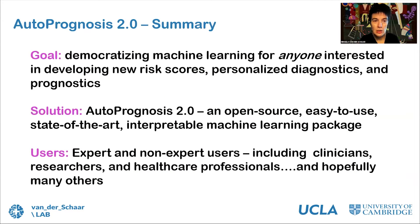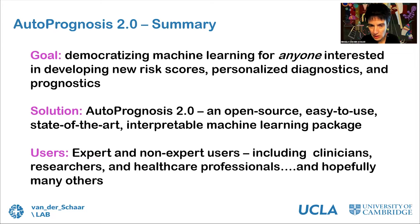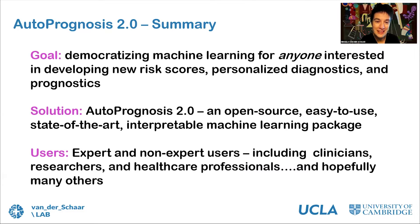We believe AutoPrognosis 2.0 can democratize machine learning for anyone interested in developing risk scores. It is an open-source, easy-to-use, state-of-the-art, interpretable machine learning package. Fergus will tell you more about how to use it in both expert and non-expert environments. I really hope all of you will engage with this tool and help us build it into a useful and pertinent tool to empower healthcare professionals.